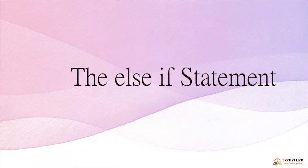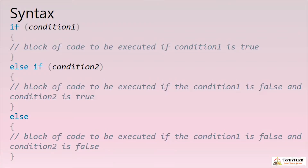The else-if statement. Syntax uses two conditions: the first if condition is checked — if true, that block executes; if false, a second condition is checked using 'else if' — if that is true, its block executes; if both conditions are false, the else block is executed.